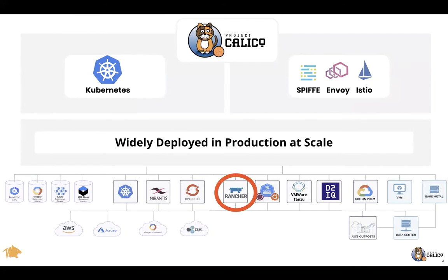If you haven't heard of Project Calico before, it's an open source project that started when Kubernetes started, to help fuel networking and address the networking aspects of Kubernetes workloads. We helped really drive adoption in production and at scale. We helped with both the CNI spec and the policy spec — the Kubernetes network policy — and were also involved from the beginning around the launch of Istio and SPIFFE, among other open source projects.